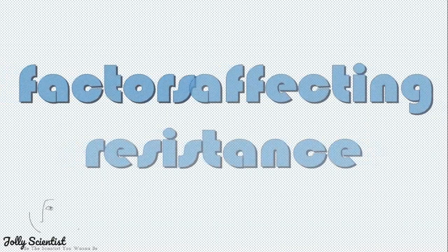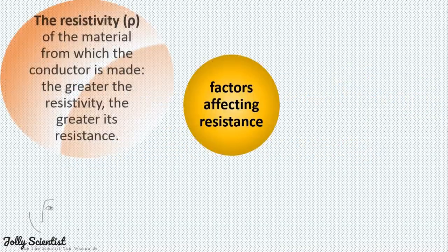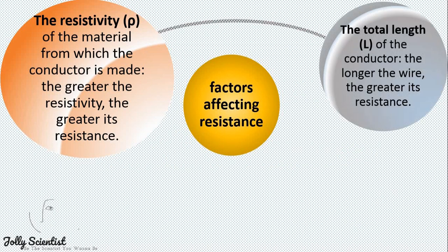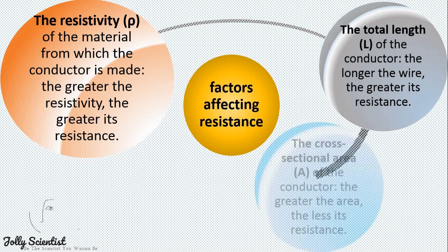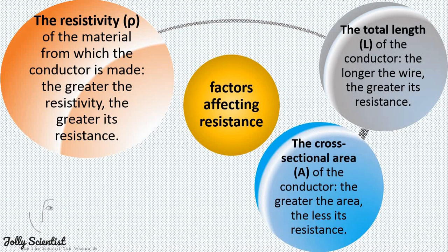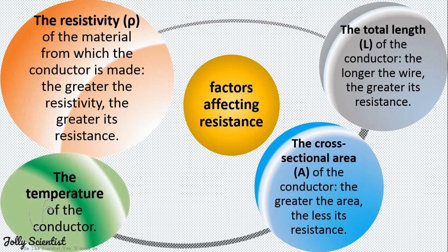Factors affecting resistance. First, the resistivity of the material from which the conductor is made — the greater the resistivity, the greater its resistance. Second, the total length of the conductor — the longer the wire, the greater its resistance. Third, the cross-sectional area of the conductor — the greater the area, the less its resistance.